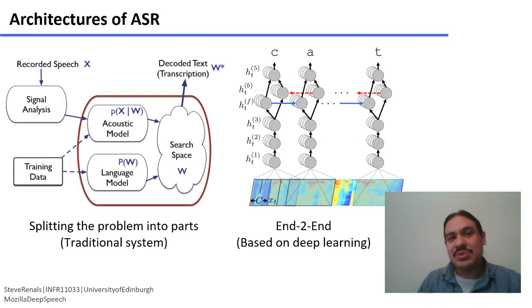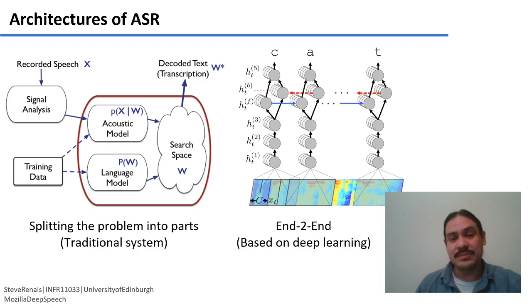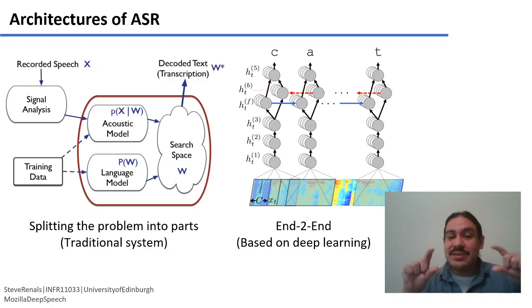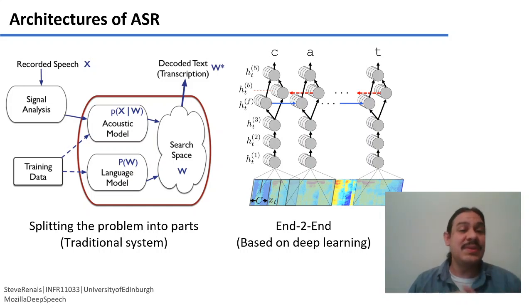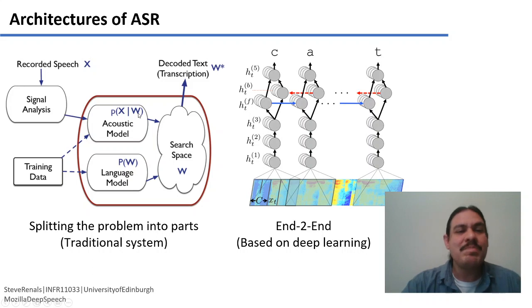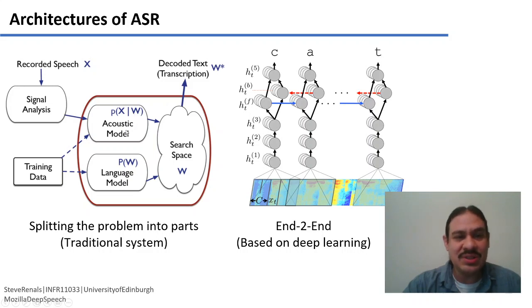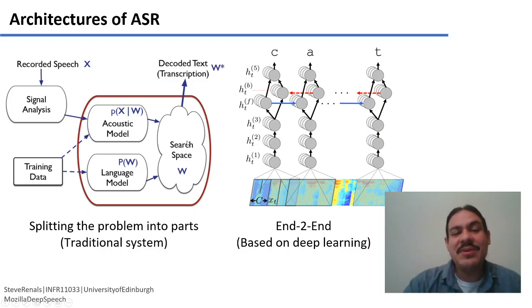There are two main approaches to tackling speech recognition. The more traditional approach tries to split the problem into manageable parts. The end-to-end approach trains directly on the audio signal and its transcription, hoping the model generalizes to new unseen audio. The traditional architecture has components that extract information from the signal, match sounds to known words, use n-gram language models from week four to determine plausible word sequences, and combine probabilities to produce a candidate transcription.